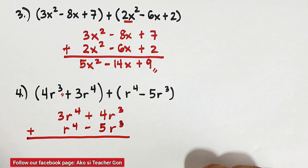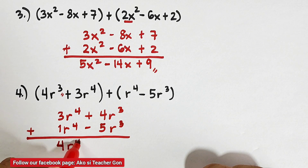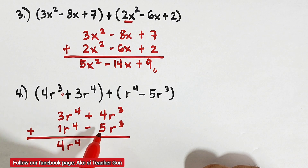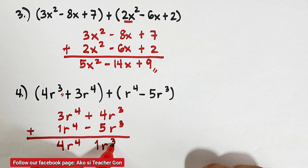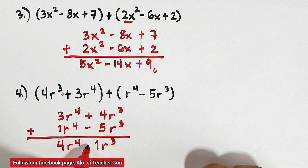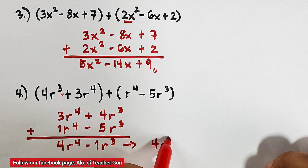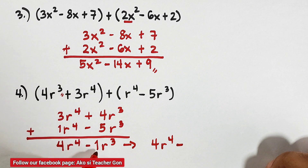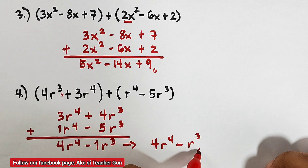Take note: r⁴ has an invisible coefficient of 1. So 3r⁴ + 1r⁴ = 4r⁴. For the r³ terms, we have 4r³ and −5r³ — different signs, so we subtract: 5 − 4 = 1, and since the absolute value of −5r³ is greater, we copy the negative sign. The coefficient 1 is invisible, so the final answer for item number 4 is 4r⁴ − r³.